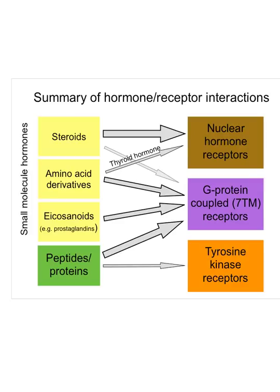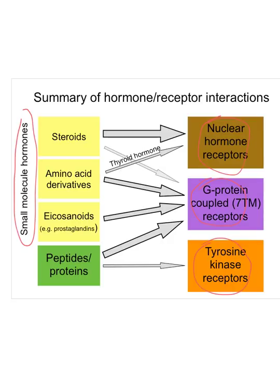This slide summarizes the different kinds of hormones present in the body. There is a set called small molecule hormones, which are the steroids and amino acid derivatives like thyroid hormone, and also the eicosanoids, which include well-known hormones such as the prostaglandins. The other major set are peptides and proteins, which behave similarly. The slide also shows the major different receptors for these hormones and which receptors are used by which hormones.